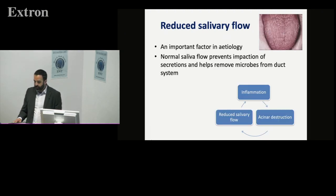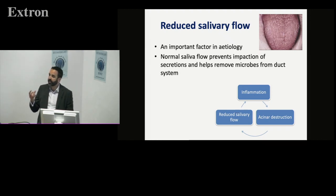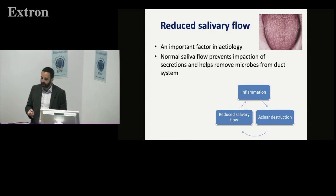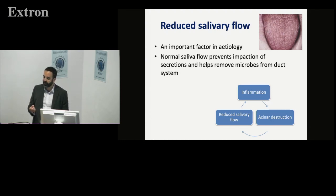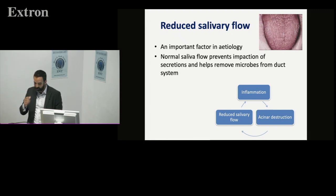Behind all of this is reduced salivary flow. Saliva has a huge number of functions, but with regards to the salivary glands specifically, it helps flush through the gland and ducts, stops mucin from accumulating and becoming static, stops concretions from forming, and helps flush out bacteria. You can see this is a cycle that can propagate on itself — reduced salivary flow leads to inflammation and tissue destruction, which leads to further reduced salivary flow, perpetuating and causing more and more of a problem.